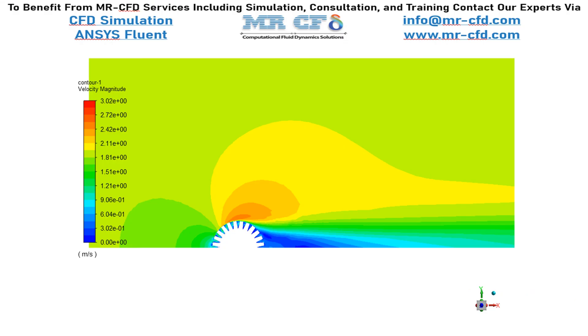Now in this slide, you can see the velocity contour for Reynolds number approximately equal to 5000, and you can easily compare this contour with the contour presented in the paper.